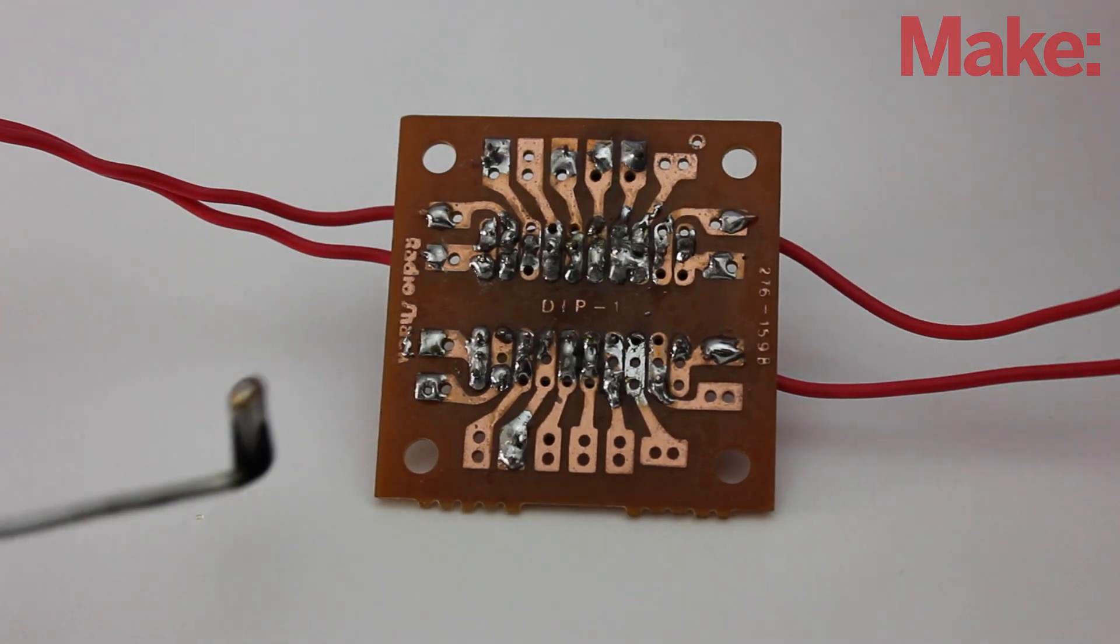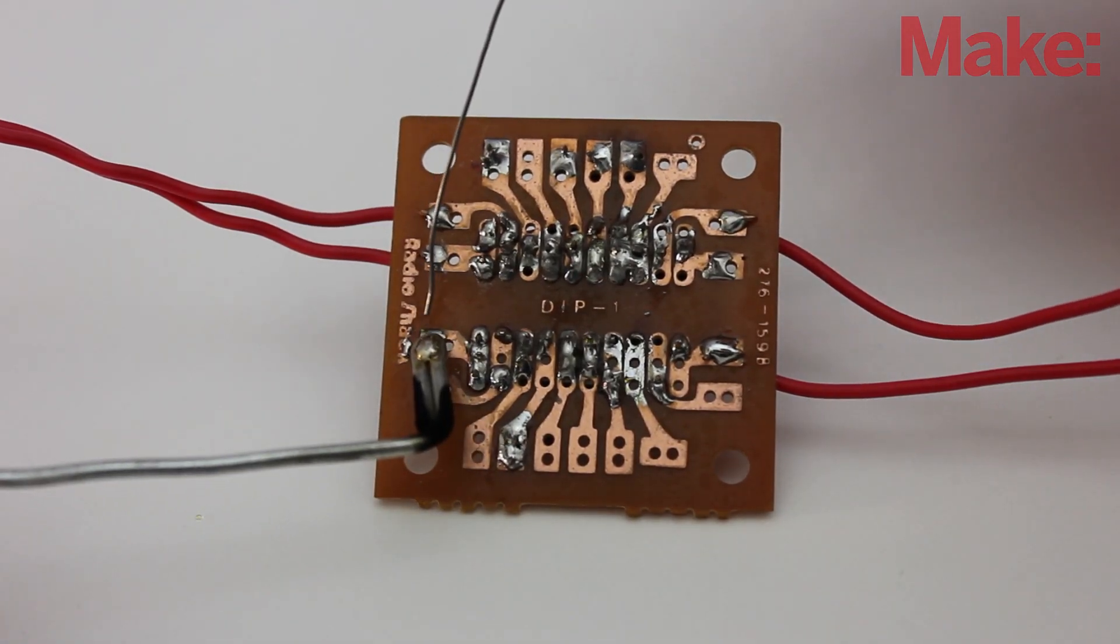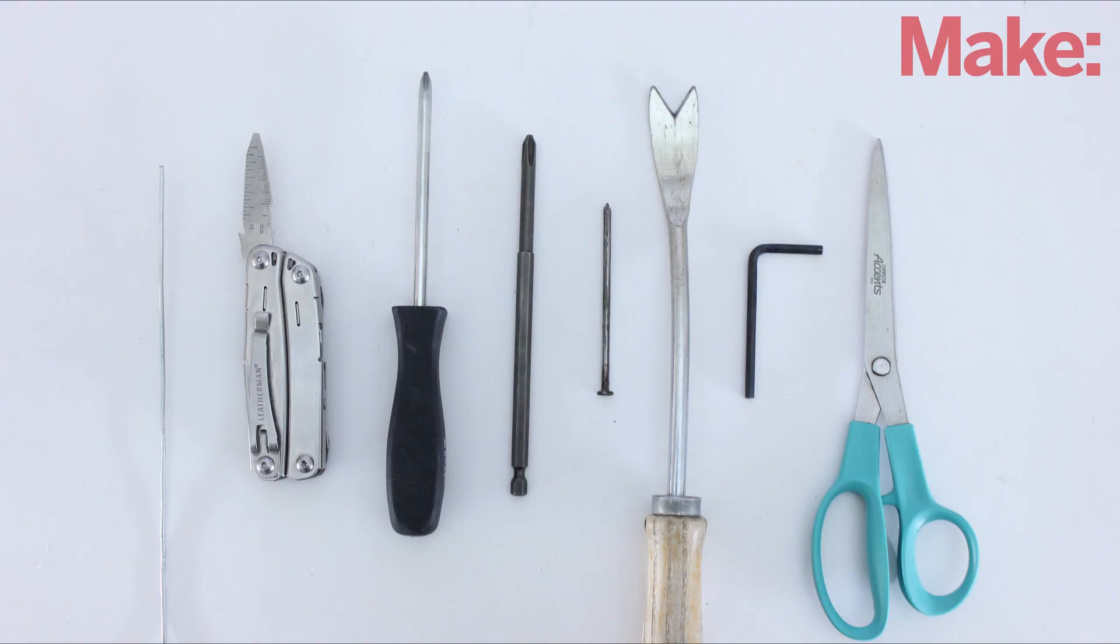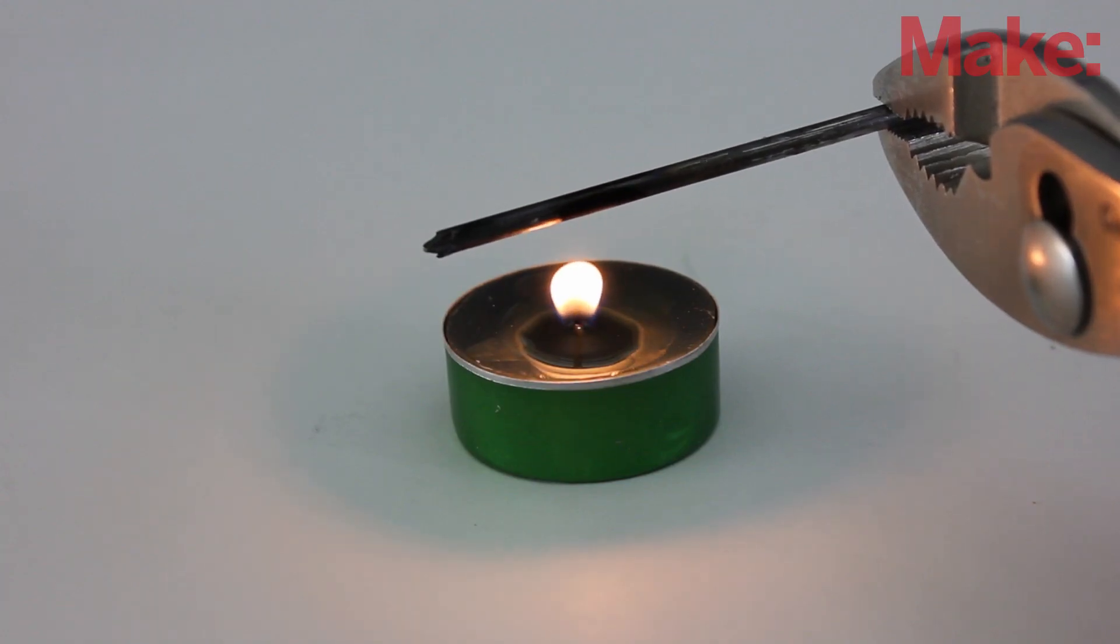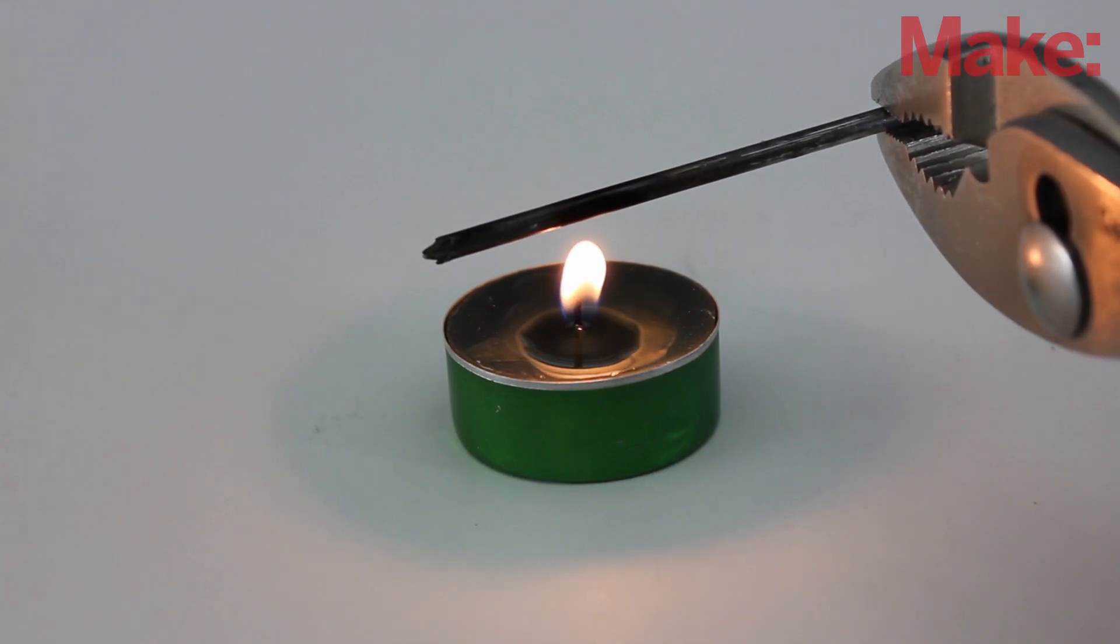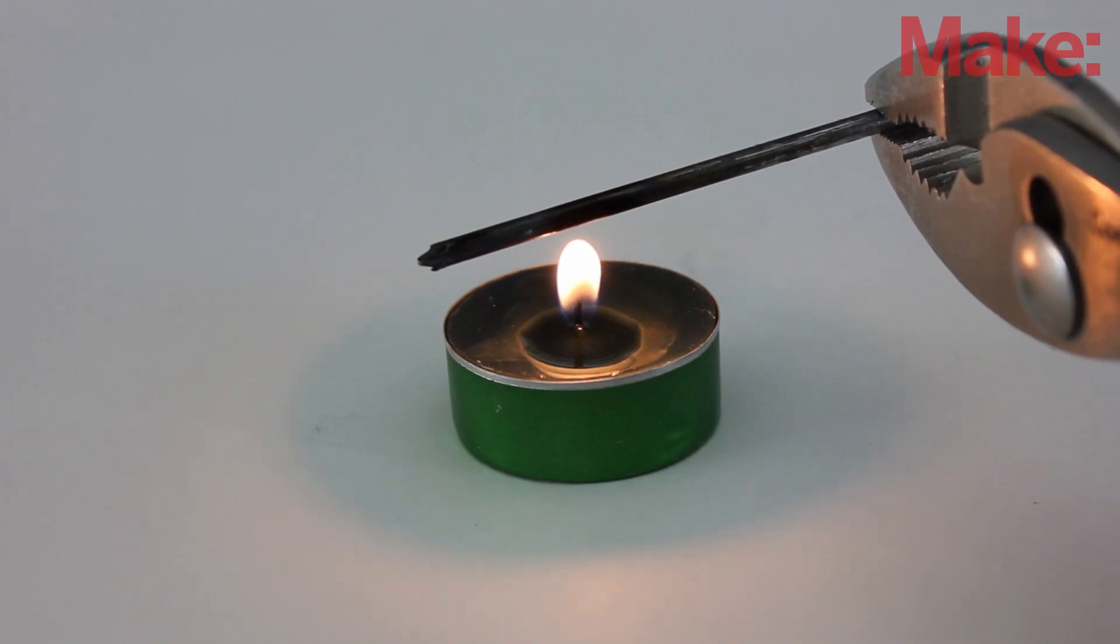Now if you want to solder on a circuit board, you're going to need some kind of tool to use as a soldering iron. I recommend using something made of steel because it holds onto the heat a lot better than copper or aluminum. When working with smaller flames such as candles and lighters, you want to use smaller pieces of metal so that they'll heat up faster.